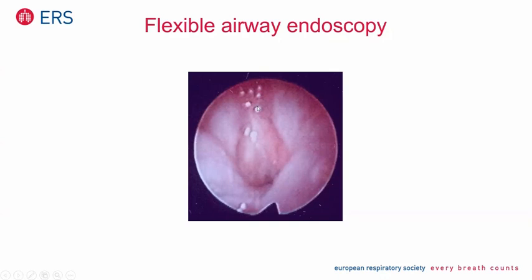This still picture shows you the larynx. This is the anterior commissure, this is the right and the left false cord, and this is the vocal cord level here. What you can see is that you don't see the subglottic area or subglottic space, but only a very tiny little hole to the very posterior aspect here — and this is the hole through which the child was ventilated.